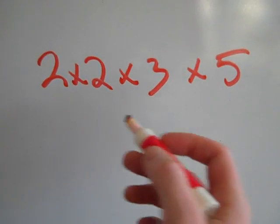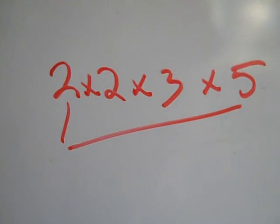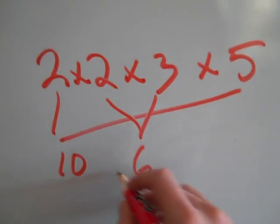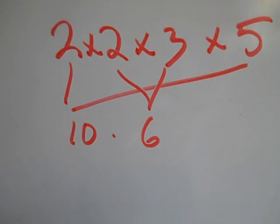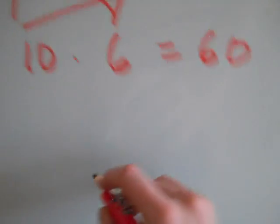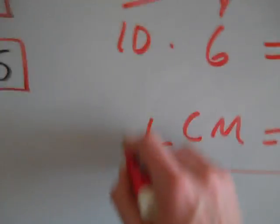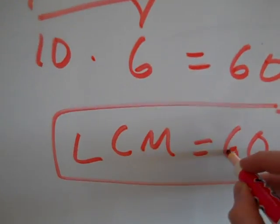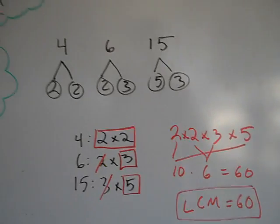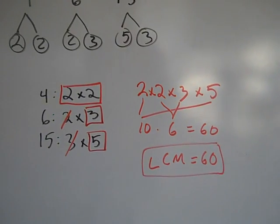Now take all of these — the two 2's I circled, the 3, and the 5 — and multiply them all together to get your LCM. You can multiply them in any order. Anytime I see a 2 and a 5, I like to multiply those first because that's 10. Then 2 times 3 is 6, and 6 times 10 is 60. So the LCM is 60. That's way less work than listing multiples until you reach 60 on all three numbers.